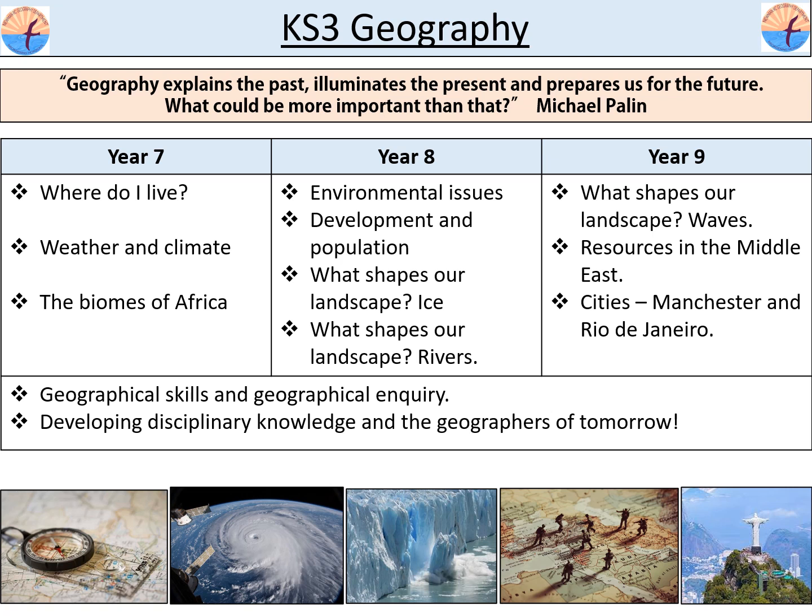In Term 3 pupils will study the biomes of Africa. This involves exploring the ecosystems at different latitudes. Pupils will learn about the climate, vegetation, living creatures, and the rocks and soils. They have previously studied climate, which is the dominant feature in an ecosystem, and in this topic they will explore how climate impacts on the other elements of an ecosystem.